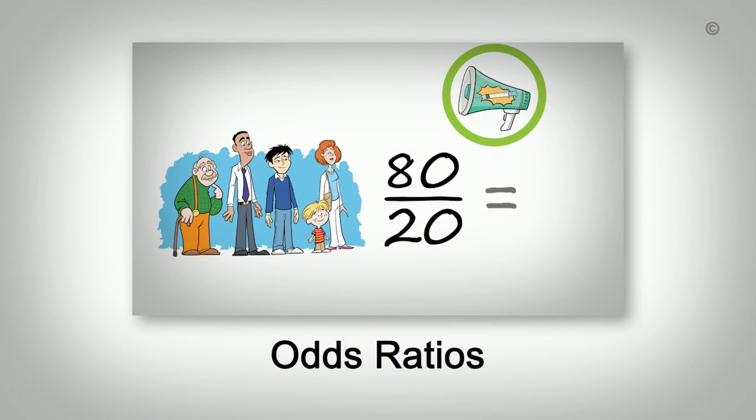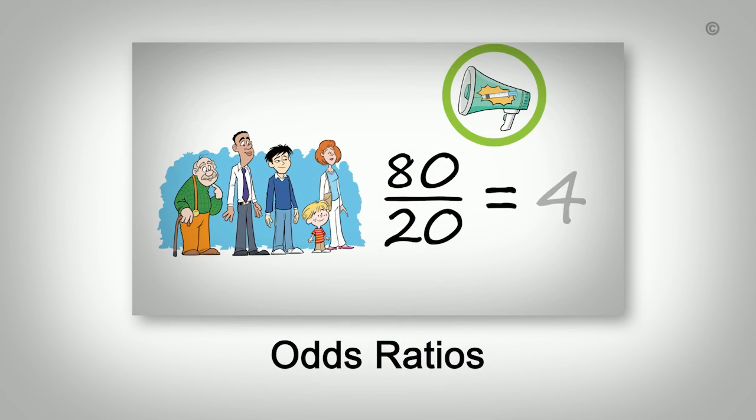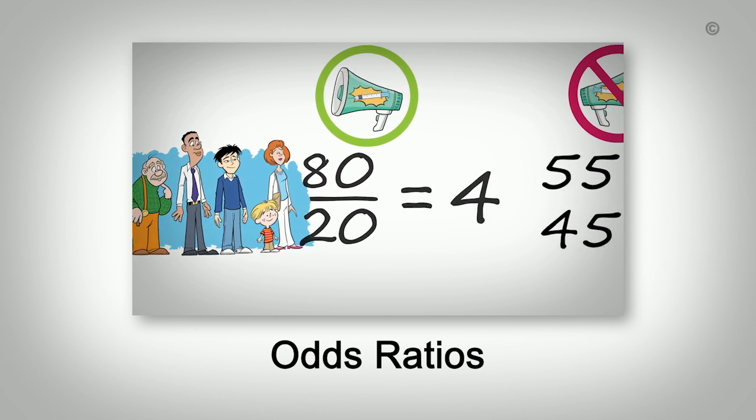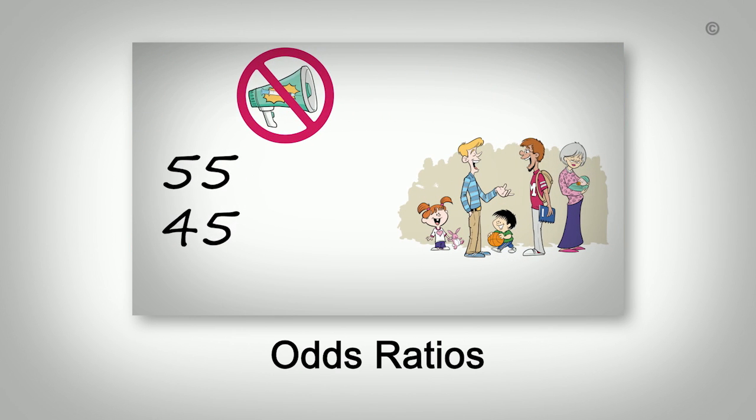This is in contrast to studies that start by selecting those with an outcome of interest, and looking back in time to see who was or was not exposed to the risk factor — for example, looking at people with cancer and investigating if any were smokers. In these studies, one would calculate odds ratios rather than relative risk. To learn more about odds ratios, watch 'How to Calculate an Odds Ratio' in this video series.